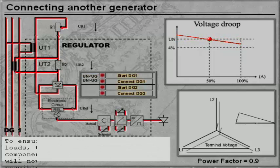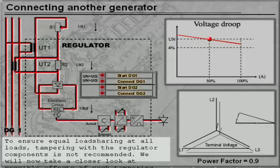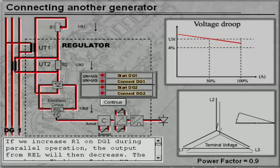To ensure equal load sharing at all loads, fiddling with the regulator components is not recommended. We will now take a closer look at possible effects of such tampering. If we increase R1 on DG1 during parallel operation, the output from REL will then decrease. The regulator believes that UG is greater than UN. The comparator output will cause an increased excitation current. The generator will then take a large part of the reactive load.